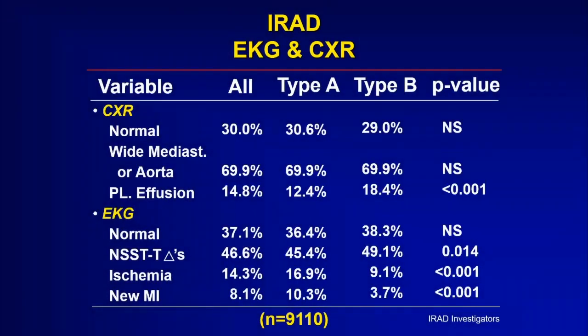What about the chest x-ray? When the aorta dissects, it's enlarged. This x-ray finding — a wide mediastinum or aorta — is seen in at least half and as high as 70% of patients. That wide aortic shadow on the chest x-ray can be a clue when a person is in an emergency room with chest pain — it can be evidence that the aorta is enlarged and may have been torn by an aortic dissection.